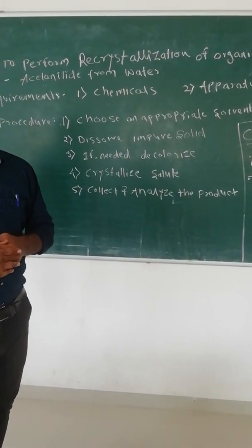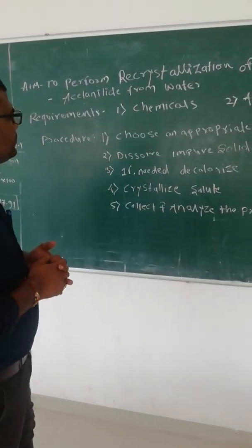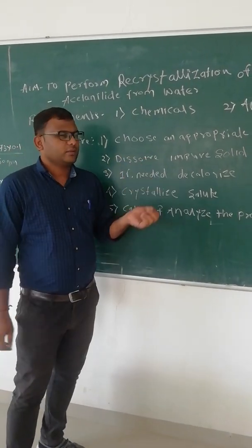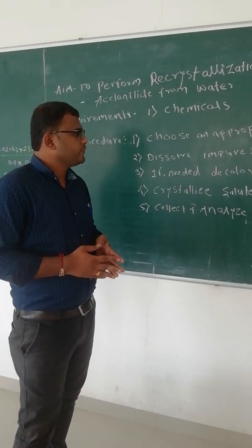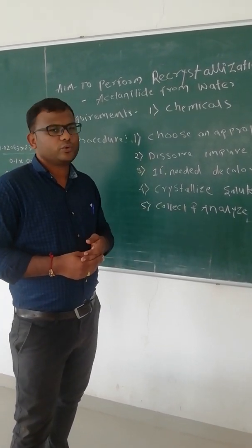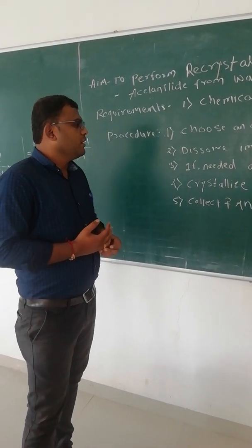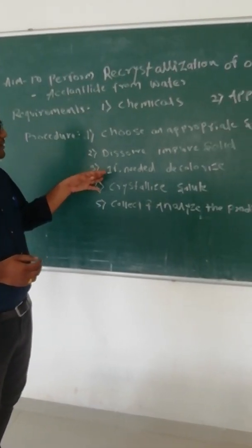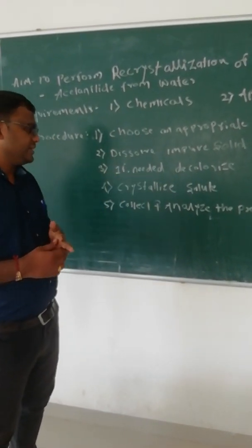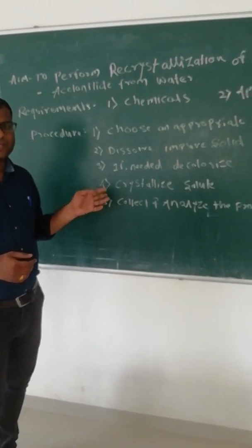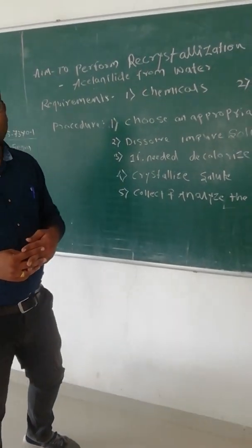Next step: dissolve your compound in the solvent. We have to weigh out the solid — the crude solid, which is nothing but your compound. For example, we weigh and dissolve it in the particular solvent. Then, if needed, decolorize it: if there is presence of coloring impurities, you need to use a decolorizing agent. The next step is crystallization — the crystallized solute is formed, and you have to collect and analyze the product.